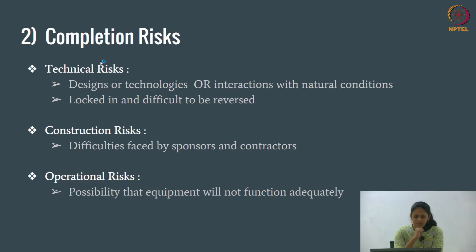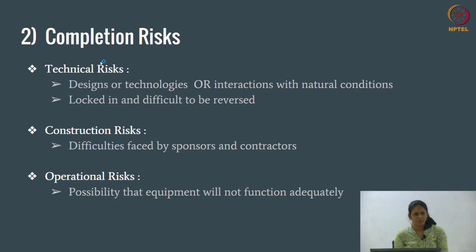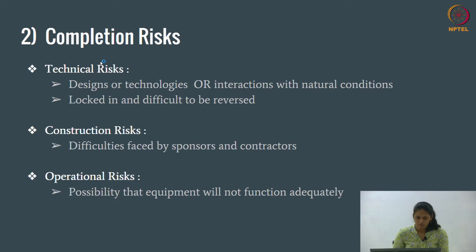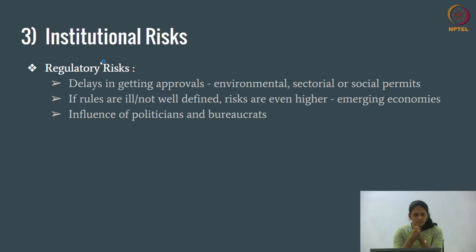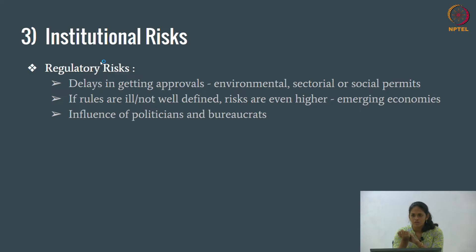Operational risks: after construction is done and technical risks are over, there is still a possibility that equipment will not function adequately. This can be reduced by investing in high-quality systems from the initial stages. Institutional risks — the first kind is regulatory risks. Private parties face opposition and resistance from public authorities, causing delays in getting approvals for environmental or design plans.